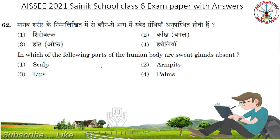In which of the following parts of the human body are sweat glands absent? Options: Scalp, armpits, lips, palms. Answer: Lips.